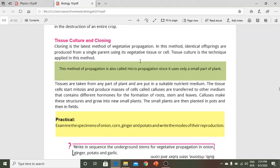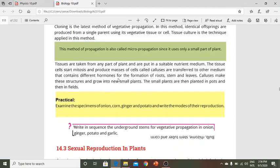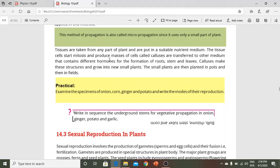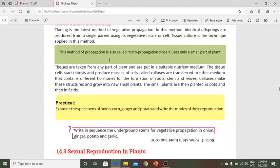Tissue culture and cloning: Cloning is the latest method of vegetative propagation where identical offspring are produced from a single parent. In this technique, tissue is taken from the plant and placed in a suitable nutrient medium. Mitosis occurs and a mass of cells called callus forms, which then develops into a new plant.